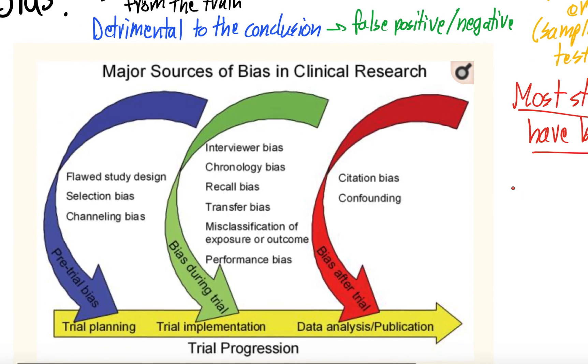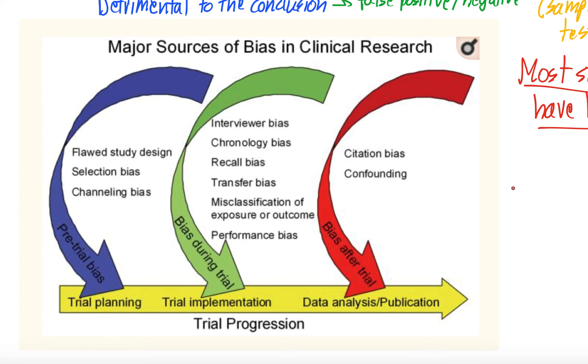So when we're looking at clinical research, the major sources of bias can occur at any point in the study. We have trial planning, we have trial implementation, and we have data analysis and publication. You can see here, they go over a few of the possible biases. In the pre-trial bias, there could be a flawed study design, selection bias, sampling bias, channeling bias. We'll go over all these in future videos.